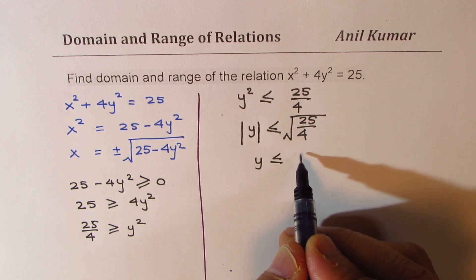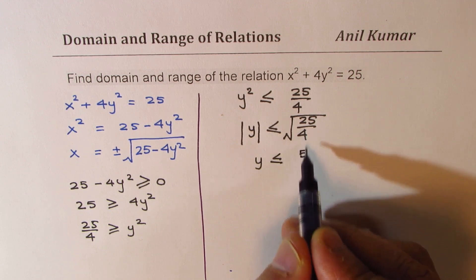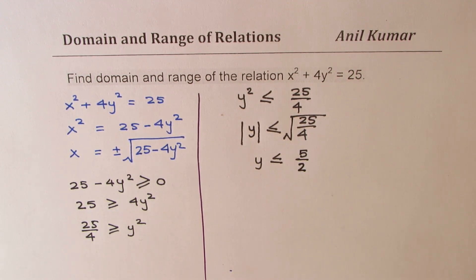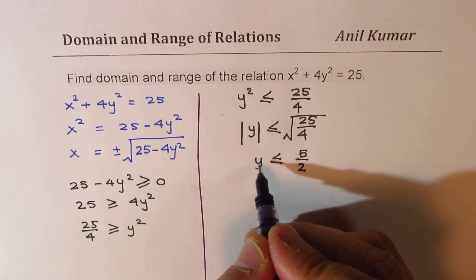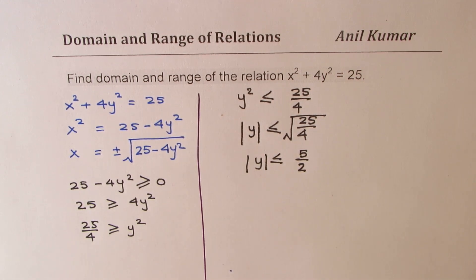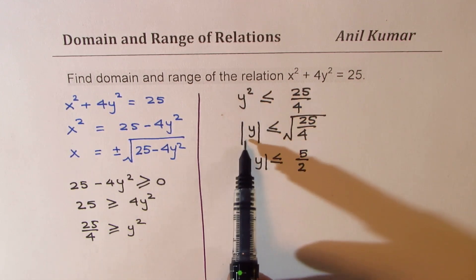Square root of 25/4: √25 = 5 and √4 = 2, so we get 5/2. Now that is the absolute value of y. Square root of square is absolute value, that is very important to understand.